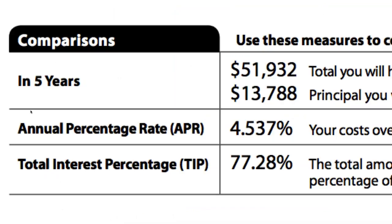This is actually what it looks like on the loan estimate. You can see it shows the five-year cost, five-year principal, annual percentage rate, and total interest percentage. Just to give you a basic definition: total interest percentage is the interest they would pay over the life of the loan divided by the principal balance. It's going to be a really high number and scary for a lot of people. But I'm going to show you a strategy later where you can show exactly what TIP has been over the years — it's always been there, it's just never been shown to borrowers.